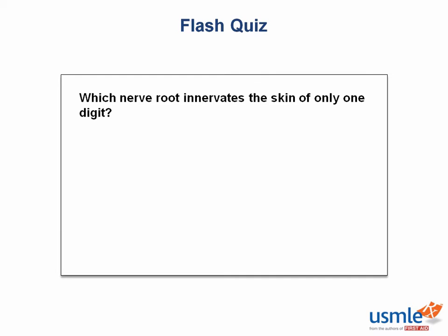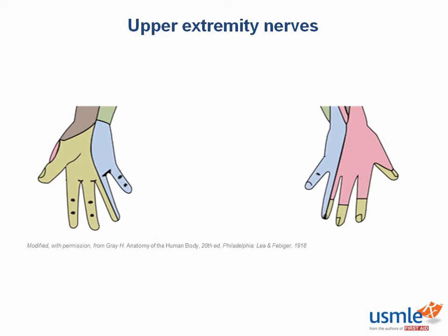Flash quiz: which nerve root innervates the skin of only one digit? Let's take a quick look at the dermatomes of the hand — you'll need more detailed knowledge beyond the nerve roots. On the palm, the skin here is innervated by the ulnar nerve, and here by the median nerve. Have you ever had your pinky finger fall asleep? It was probably because you fell asleep studying on your elbow, where the ulnar nerve was compressed. On the dorsal side of the hand, we see the ulnar, median, and radial nerve all innervating the skin. The ulnar nerve wraps around to the lateral part of the back of the hand, the median nerve wraps over the top, and the radial nerve innervates the skin on the medial dorsum.